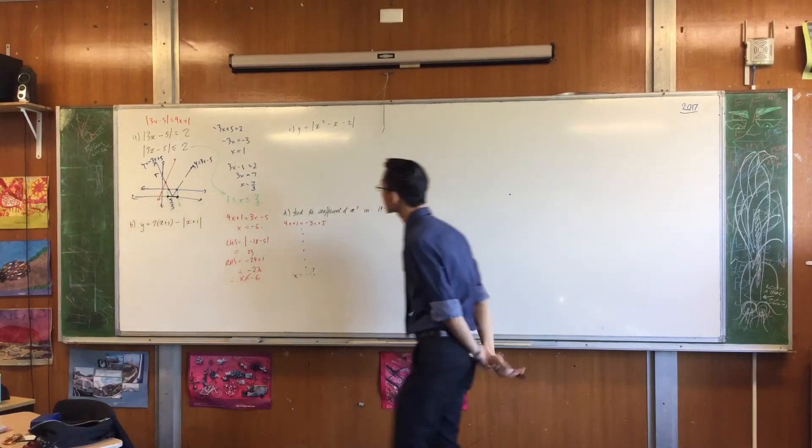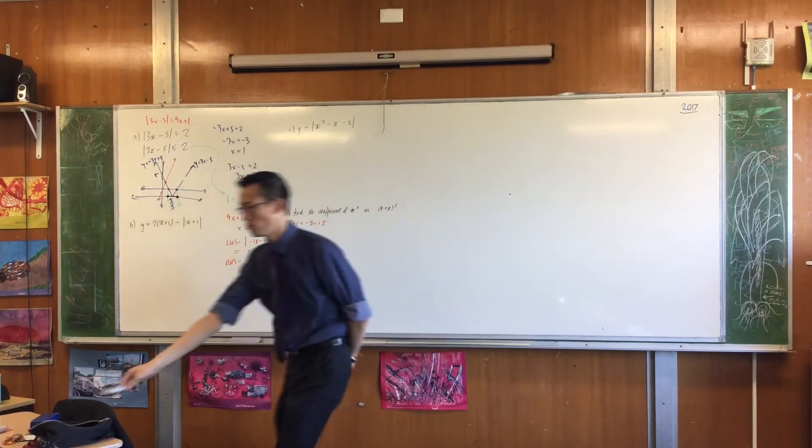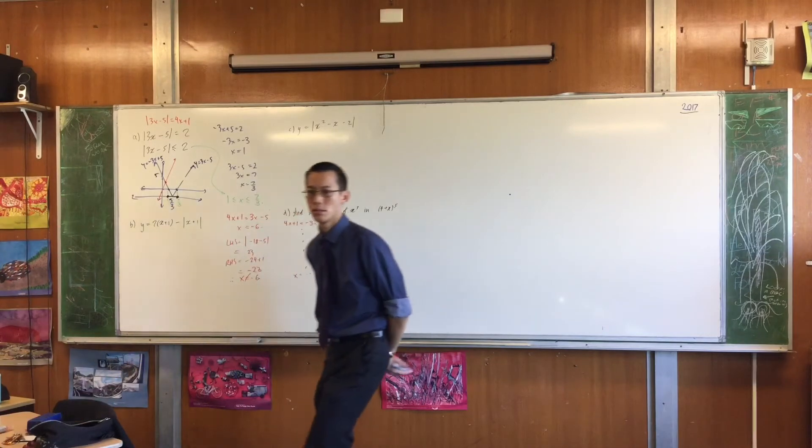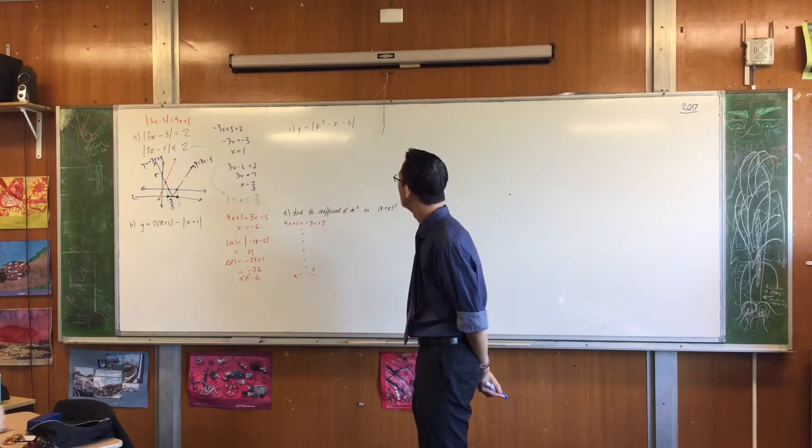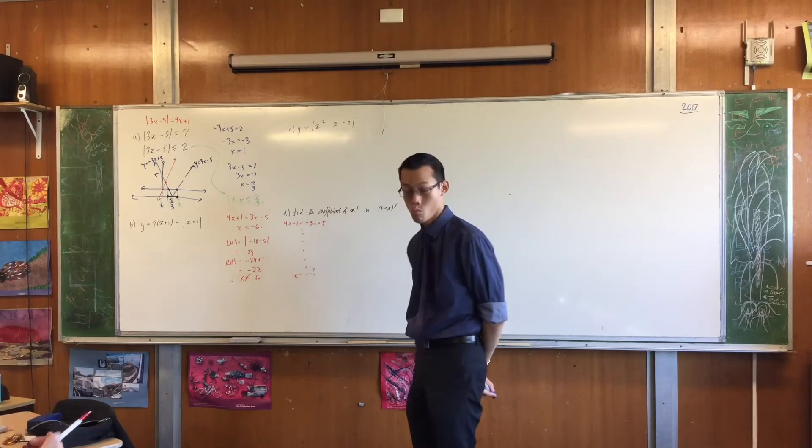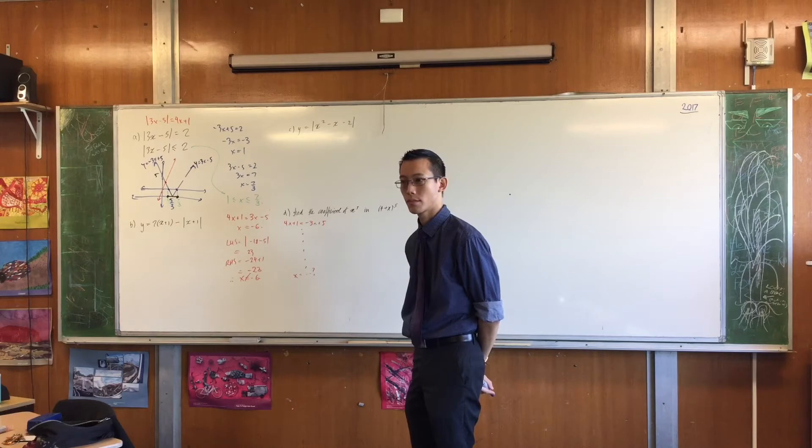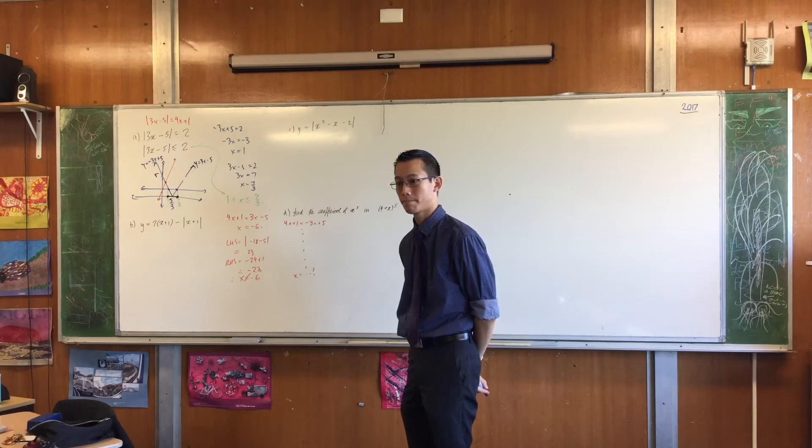So the main question is, when you find y-intercept, right, you always just make x equals 0. And so in that question, it would just be absolute value of minus 2, right, negative 2. Would the absolute value still apply to the negative 2, or would it just disappear?